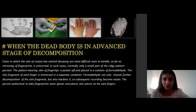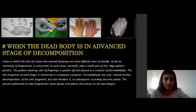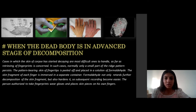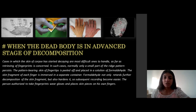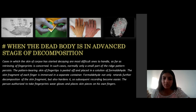In the advanced stage of decomposition, we can insert the finger because the skin will decompose and peel. In that case, we remove the peeled-off skin and place it in formaldehyde solution to stop the bacterial decomposition effect. This makes it easier to peel off and preserve the skin for printing.